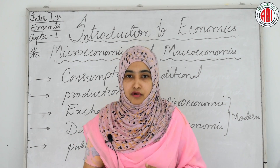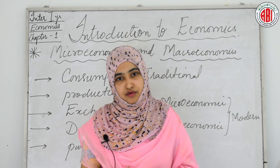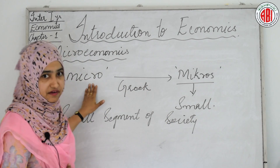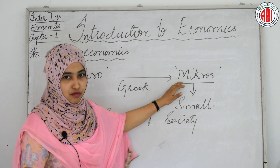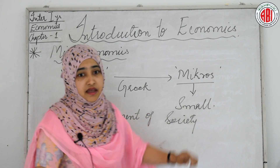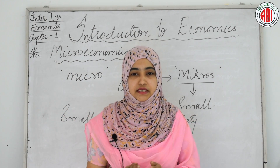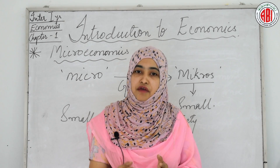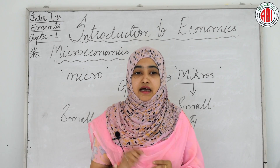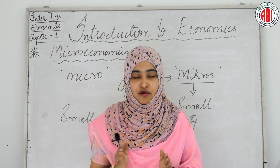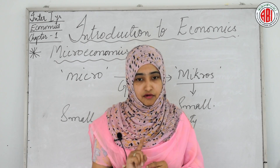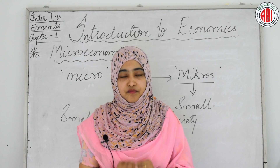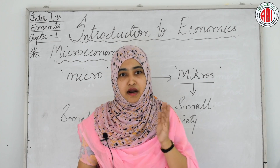Now we will discuss in detail about macroeconomics and microeconomics. The term microeconomics is derived from the Greek word 'micros', meaning small. Microeconomics is that branch of economics which studies an economy or decision-making unit and considers in detail the behavior of a particular unit. It studies the economic actions and behavior of individual units and small groups of individual units. Microeconomics is also known as partial analysis.